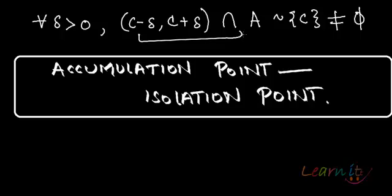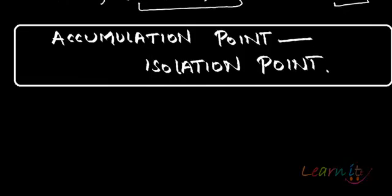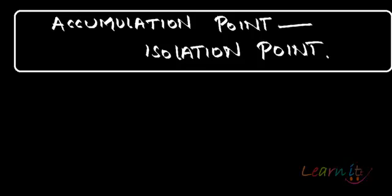This means that this intersection contains some point excluding c. Apart from c, this should have some point. That is what is an accumulation point or cluster point.